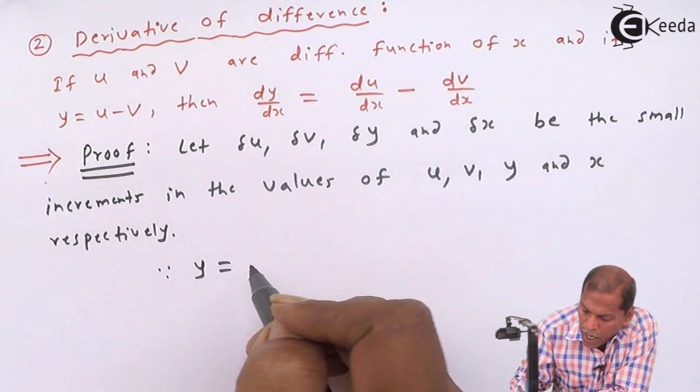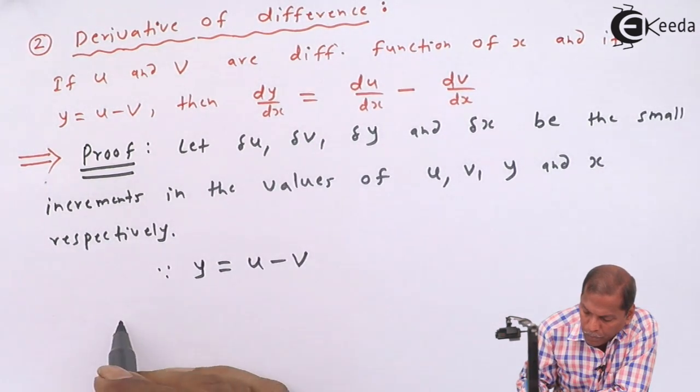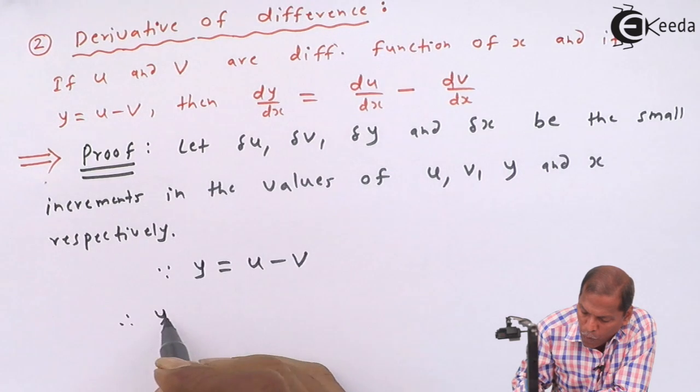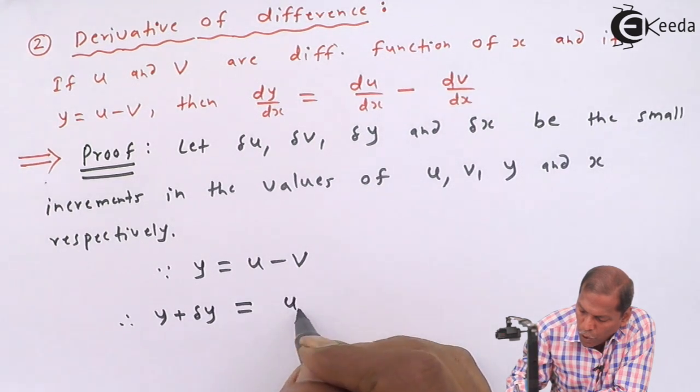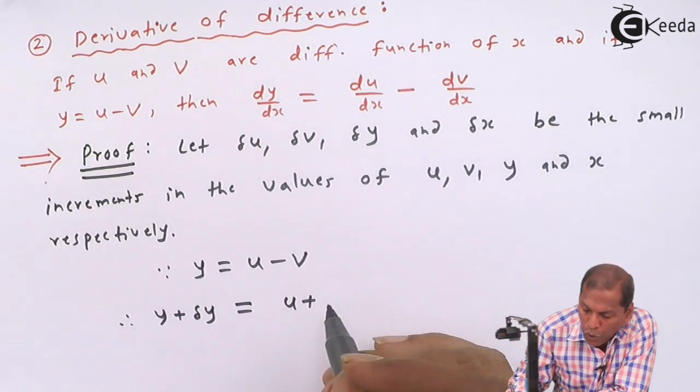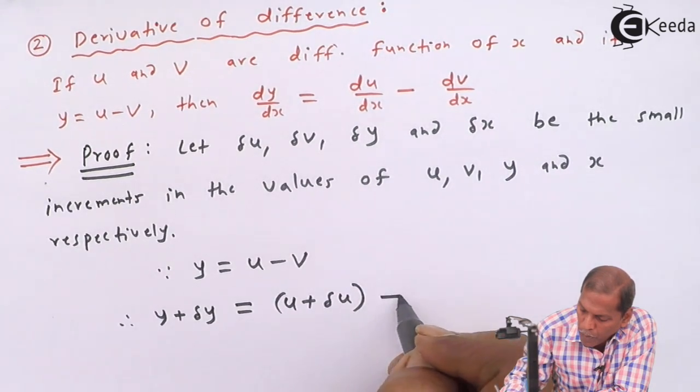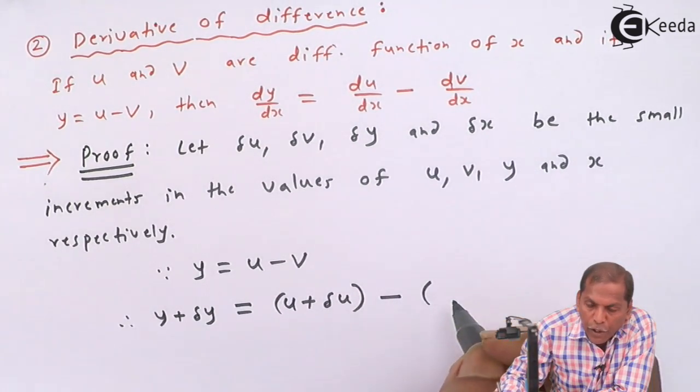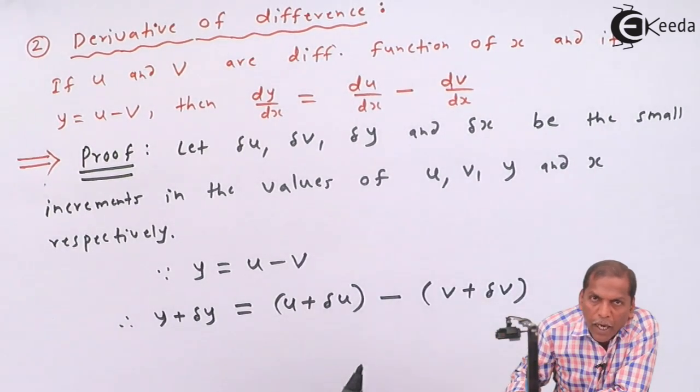Since y equals u minus v, therefore when y changes to y plus δy, this equals u changes to u plus δu minus v changes to v plus δv.